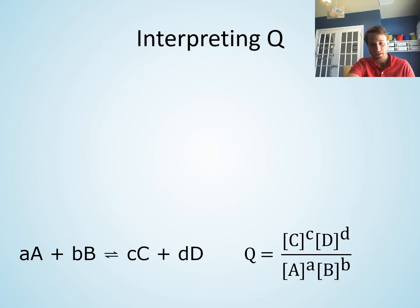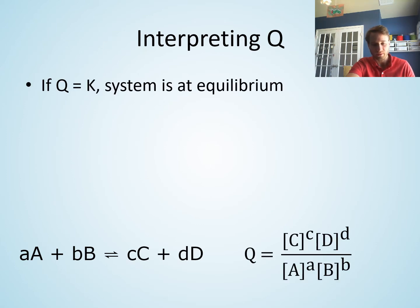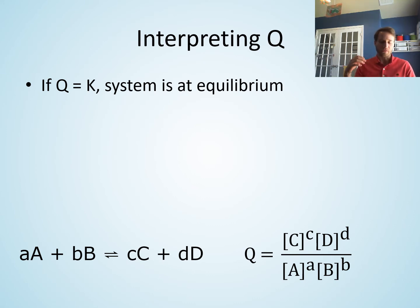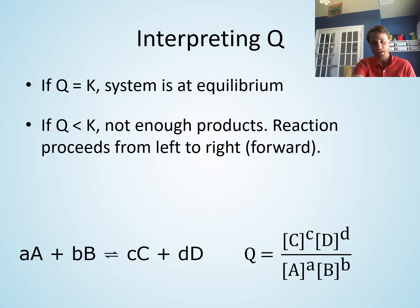For example, if the reaction quotient Q happens to be the exact same number as K — let's say K is 125 and you plug in your concentrations of products and reactants to calculate Q and you get 125 — then you know the reaction is at equilibrium. If the concentrations have the ratio that gives you the equilibrium constant, that is telling you the reaction is at equilibrium.